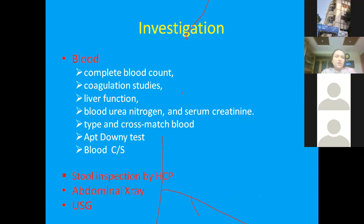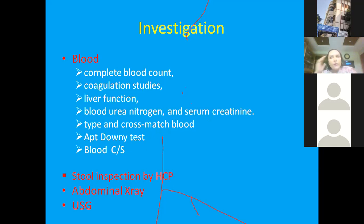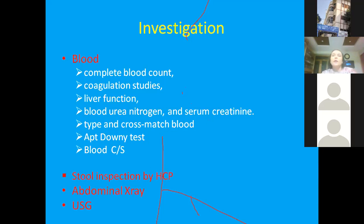Investigations include complete blood count — importantly, always check hemoglobin together with hematocrit, because hemoconcentration during acute bleeding can make hemoglobin appear falsely normal. Coagulation studies, liver function tests, blood urea nitrogen — because azotemia is seen in hematemesis — and type and cross-match should be sent. Abdominal X-ray is useful to rule out intestinal obstruction, especially in young infants, and ultrasound is important when liver disease is suspected.